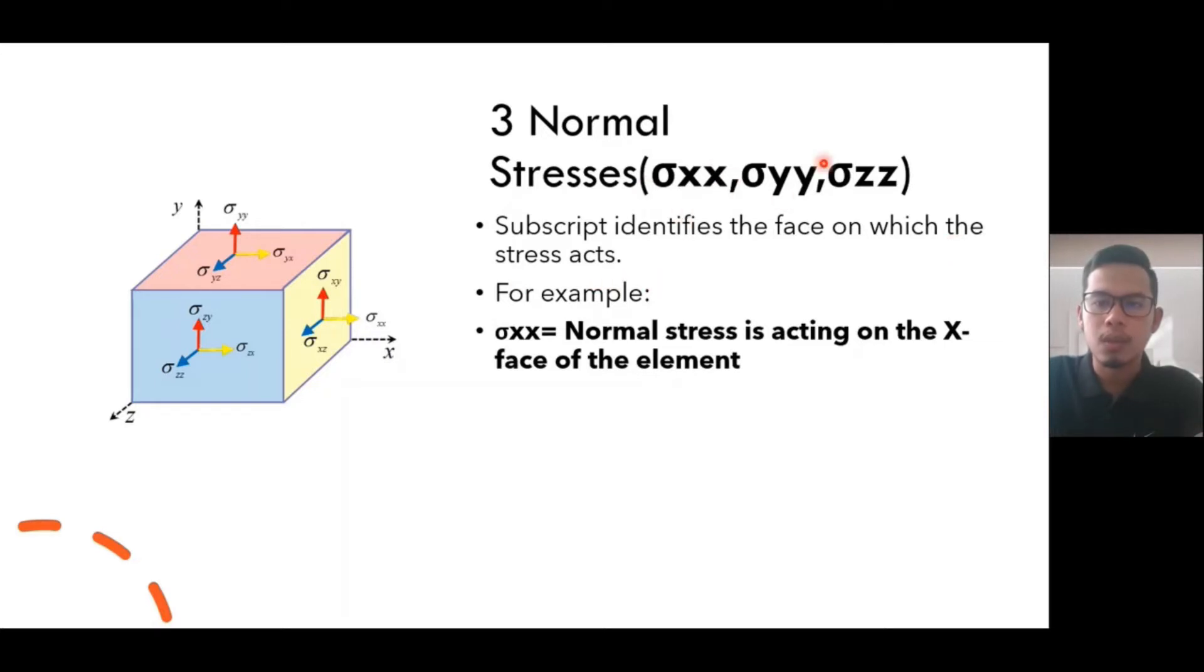Three normal stresses: the subscript identifies the face on which the stress acts. So σxx is our subscript, σyy is our subscript, and σzz is our subscript. As you guys know, here is our x face, here is our y face, and here is our z face. For example, σxx normal stress is acting on the x face of the element, so here is our x face, so the direction should be like this.